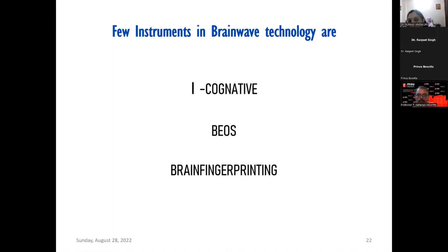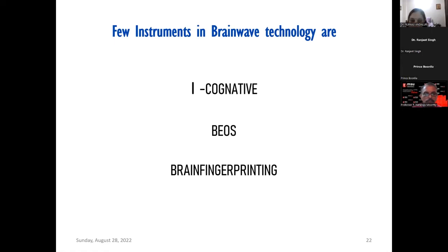At present, three variants of this technique are available in India: iCognitive from Brainwave Sciences USA, BIOS from Dr. Mukundan, and Brain Fingerprinting from Dr. Farwell, also from the US. The technique is the same, but these are different companies under different names. Different labs across India are using different variants.